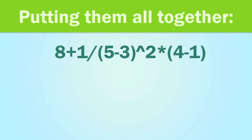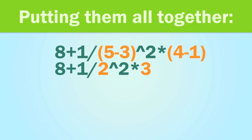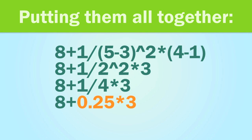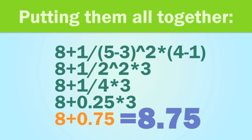Now let's put them all together. This formula may look really complicated, but we're just going to go step by step through the order of operations, and you'll see it's actually not that bad. We'll start with the parentheses and calculate each of those to get 2 and 3. Next, we'll look for any exponents — there is one, 2 to the second power — and when we calculate it, it becomes 4. Next, we'll do the multiplication and division going from left to right. And now all that's left is addition, and that gives us our answer: 8.75. That's the same answer that Excel would give you if you entered in that formula.